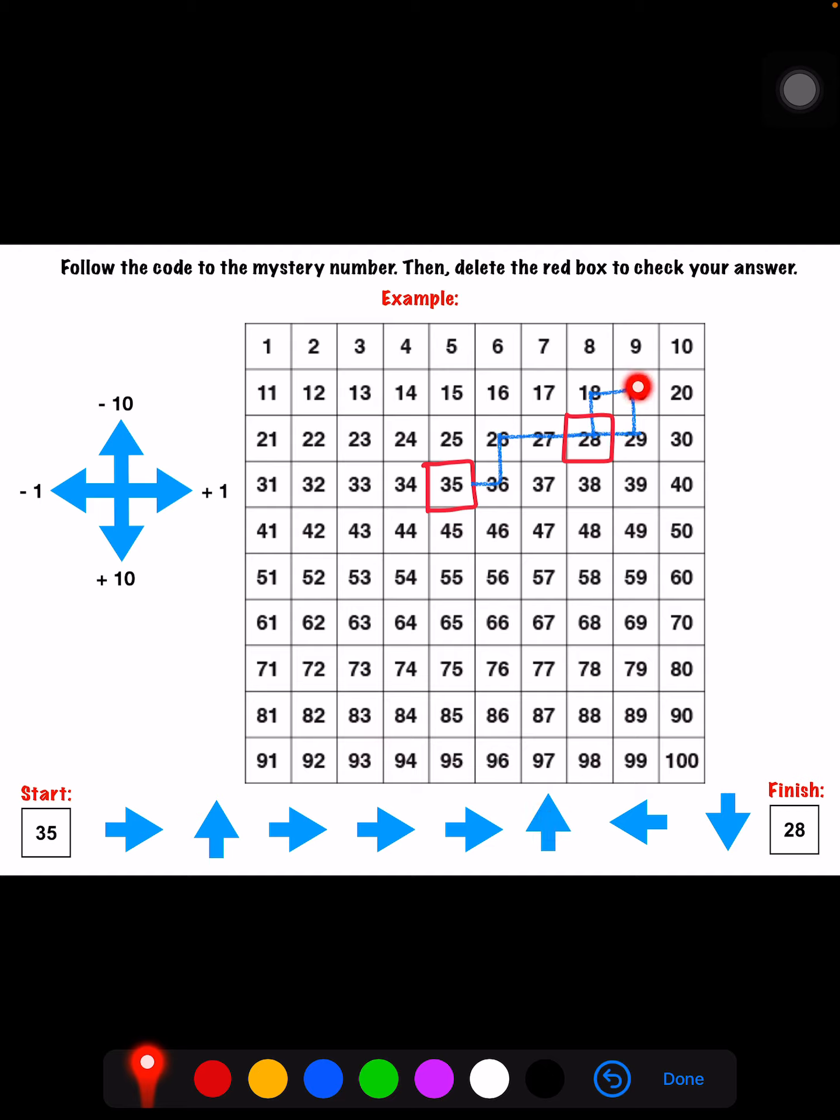Then it says go up one and over one to the left and down one. That's the last arrow, the last part of my code. So the number I'm ending on is 28. That's why I put a red box around it. So you can see that I started at 35 and I used the code to follow the direction on the 100 chart and I ended up at 28.